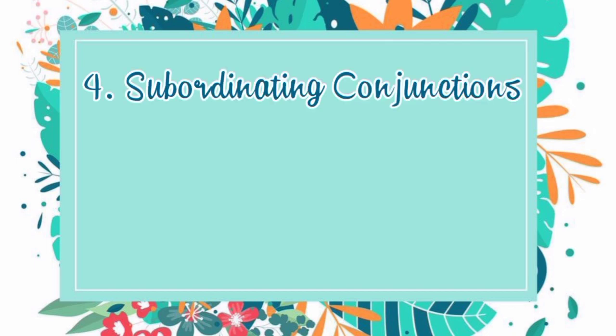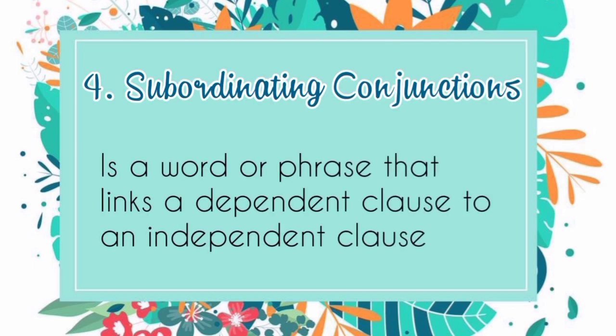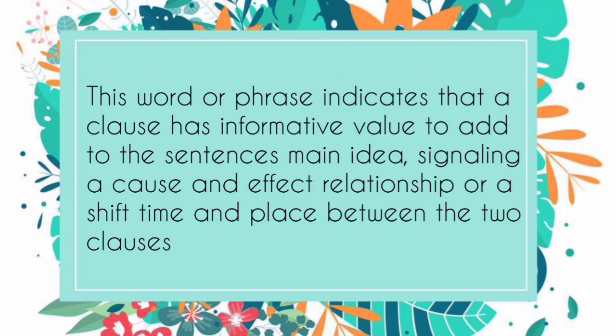Fourth and last, subordinating conjunction is a word or phrase that links a dependent clause to an independent clause. This word or phrase indicates that a clause has informative value to add to the sentence's main idea, signaling a cause and effect relationship or a shift in time and place between the two clauses.